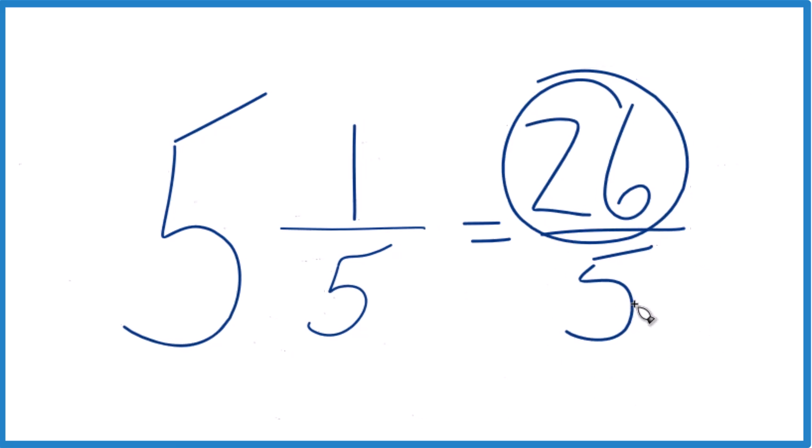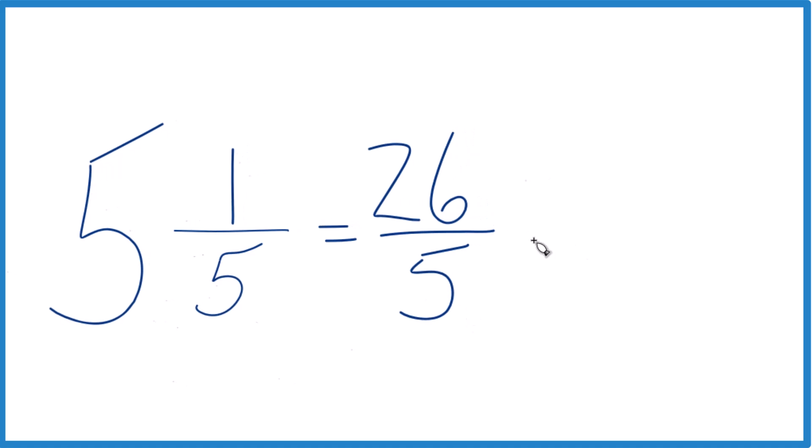You can even check your work here, because 5 goes into 26. 5 times 5, that would be 25 with 1 left over, and then we bring the denominator across, and 5 and 1/5, that's what we started with, so we know we did it correctly.